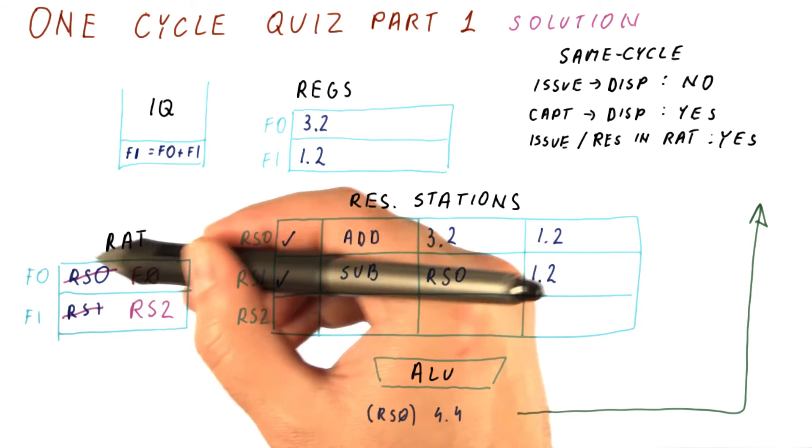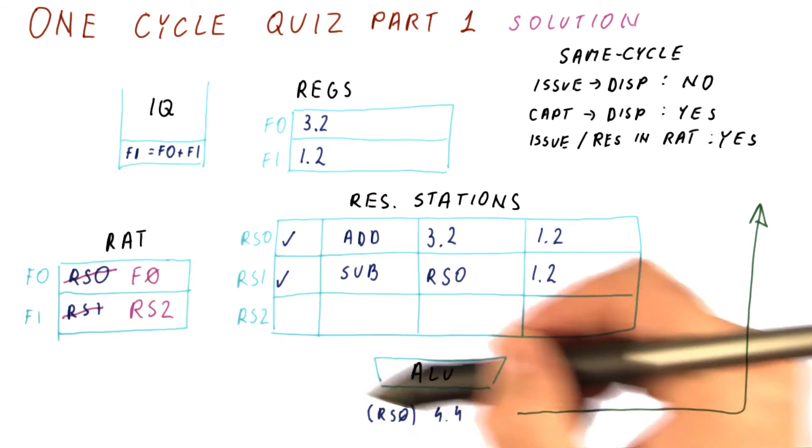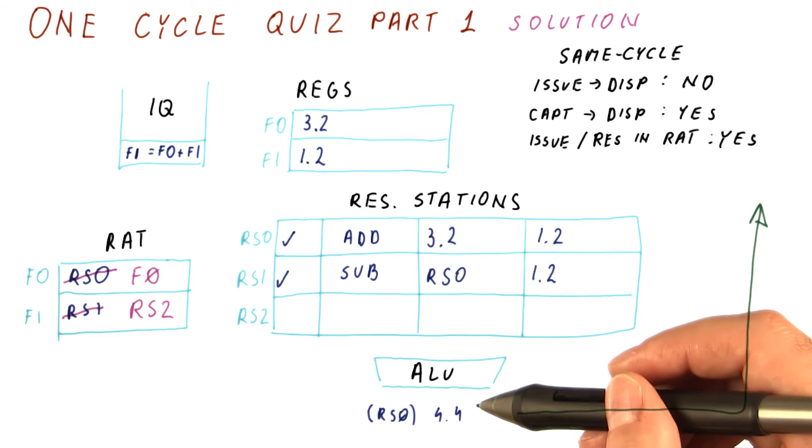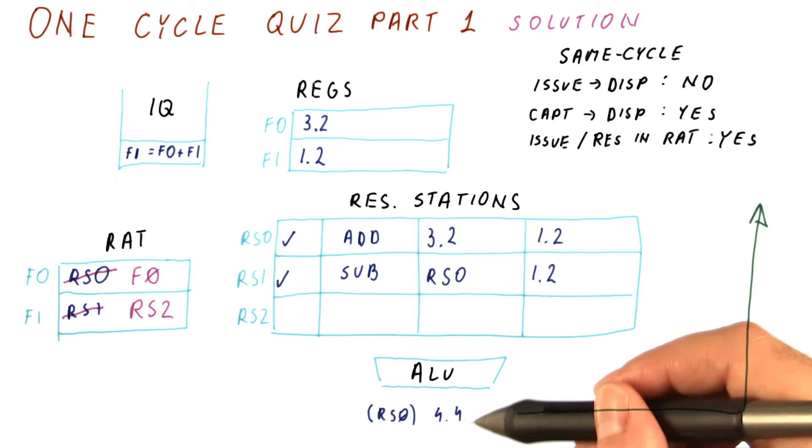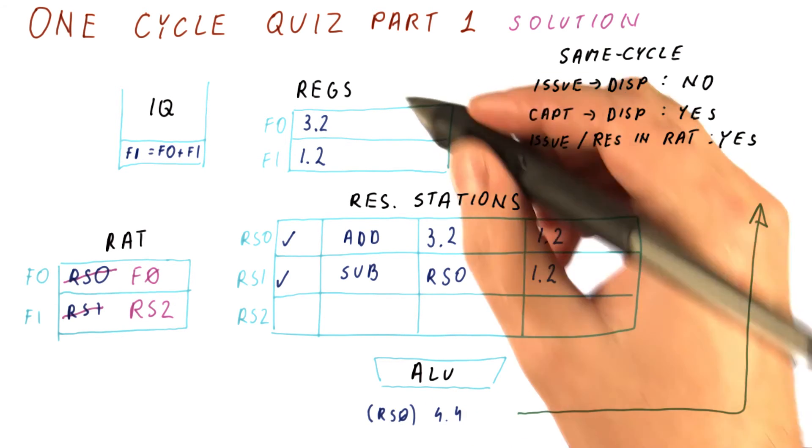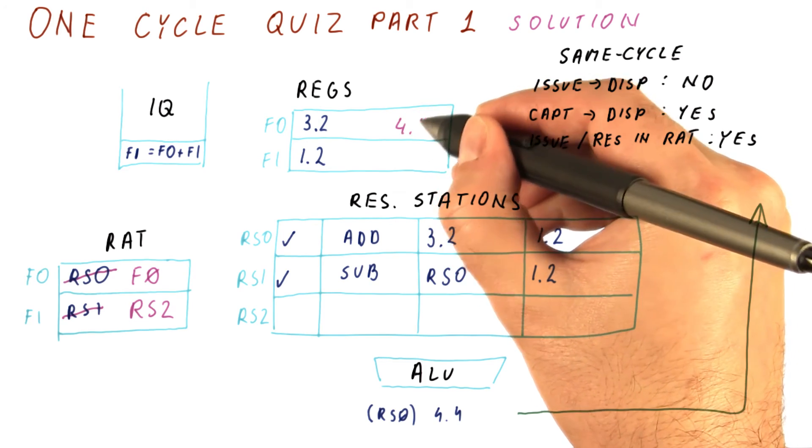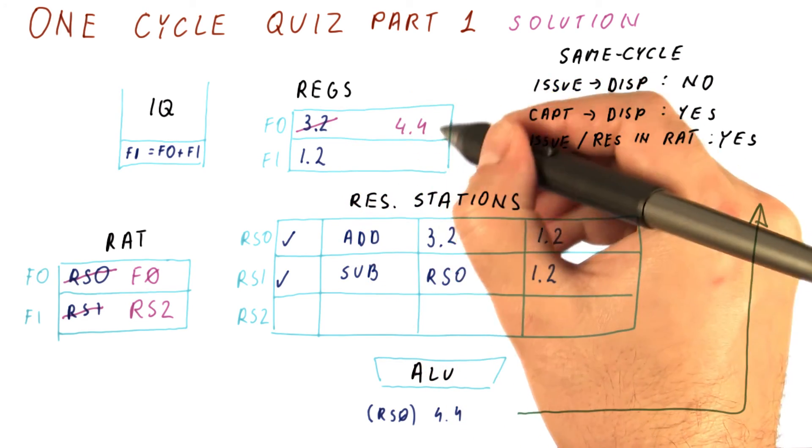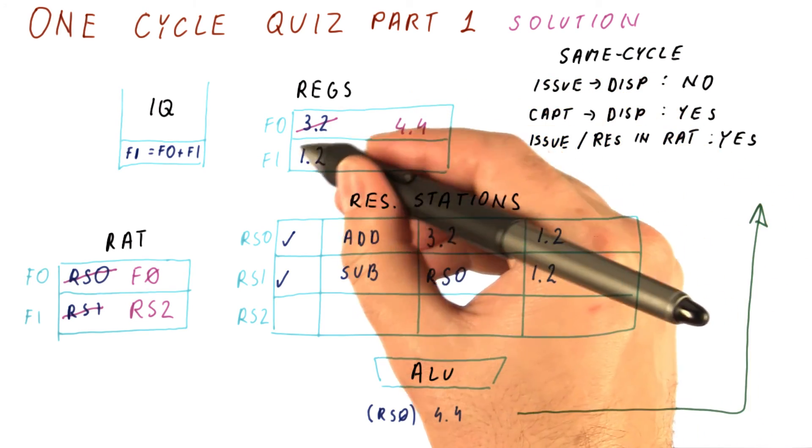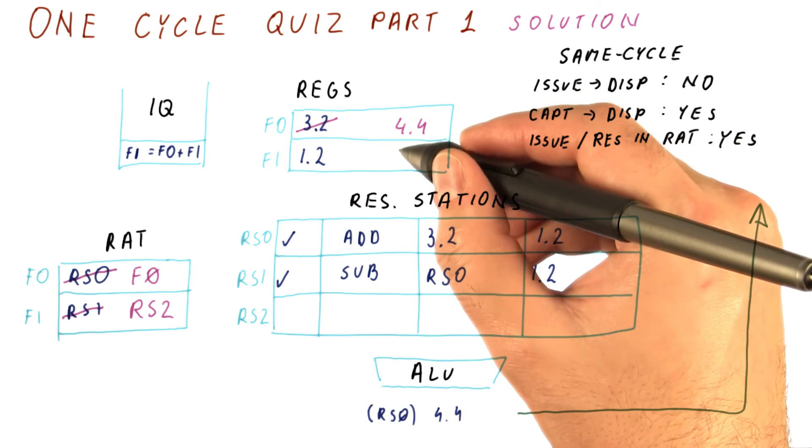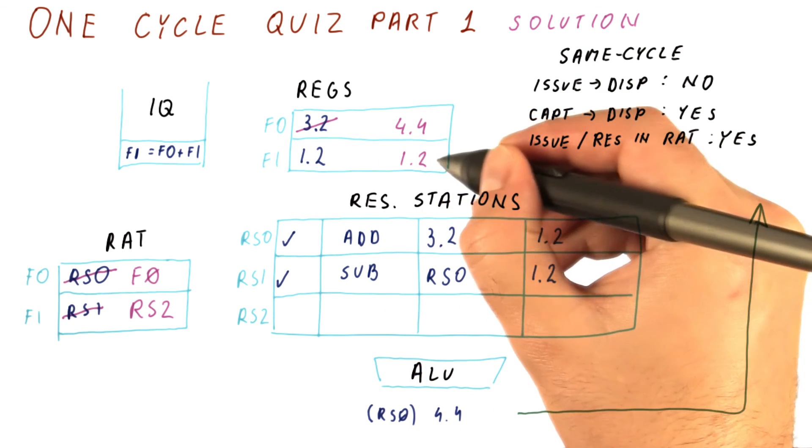Because the RAT entry was pointing to RS0 and RS0 is broadcasting, that means that the register file actually will get value 4.4 for that register. So the register here will change. And finally, this register here, nobody wrote to it in this cycle, so it stays the same as it was.